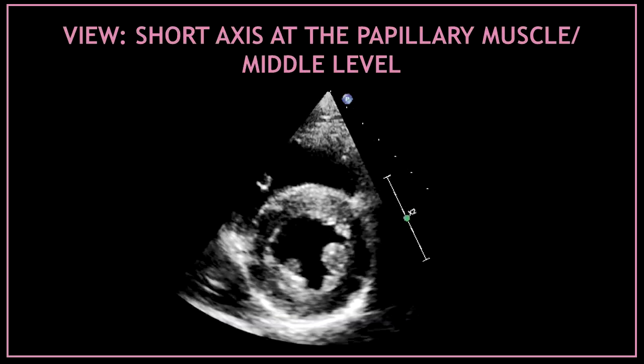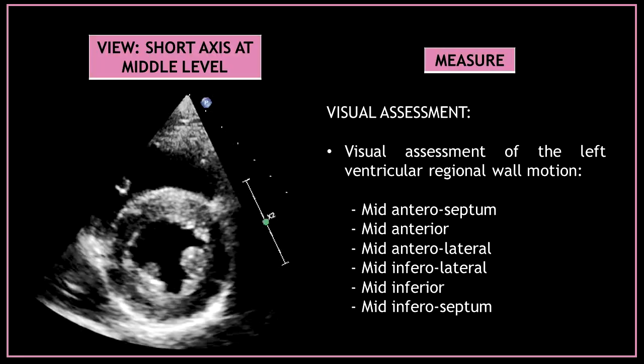Now let's move to the parasternal short axis view at the papillary muscle or middle level. Obtain this view and do a visual assessment of the left ventricular regional wall motion. In this view we can only see the middle segments of different left ventricular walls, so assess for any regional wall motion abnormalities of the mid-anteroseptal, mid-anterior, mid-anterolateral, mid-inferolateral, mid-inferior, and mid-inferoseptal segments.